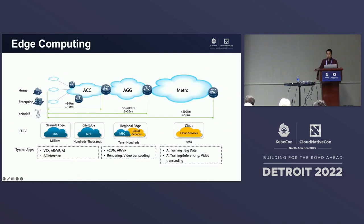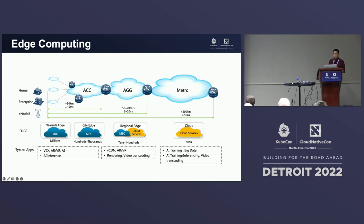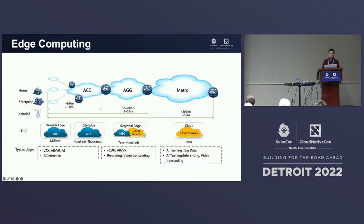Edge computing — I'll give a brief intro since hopefully everyone is already an expert on this. There are different types of Edge. We're talking about the Near-sight Edge, which is very close to the device. Then we have the City Edge, the Regional Edge, then we reach the central cloud. Each edge tier has different typical applications. For Near-sight, we do a lot of AI inference and AR/VR, while at the regional level it's typically CDN, AR/VR, rendering, and video transcoding.